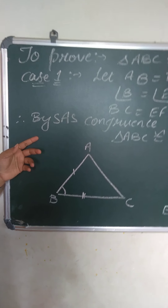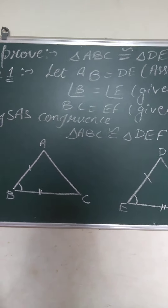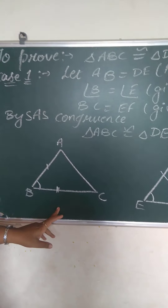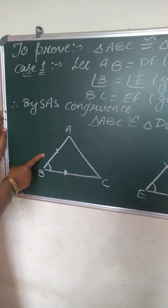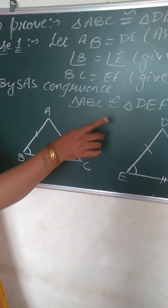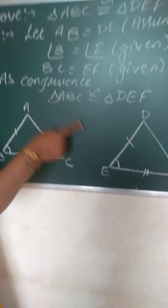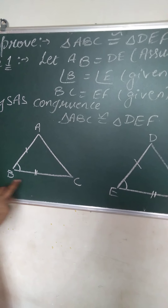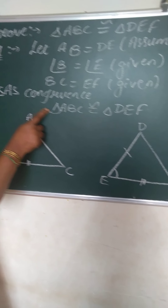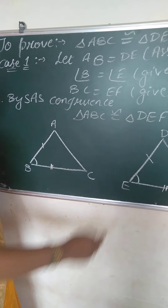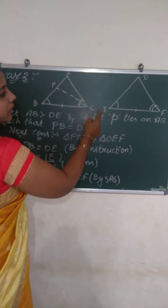I am going to give the proof of triangle ABC congruent to triangle DEF in three cases. In the first case, I will prove the two triangles are congruent by SAS congruence rule by assuming one of the sides as equal. That is, they have not given AB equal to DE, but I assume AB is equal to DE. With angle B equal to angle E given and BC equal to EF, by SAS congruence, triangle ABC is congruent to triangle DEF. In case 1, we have proved triangle ABC congruent to triangle DEF.